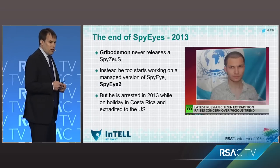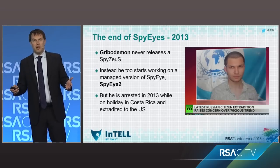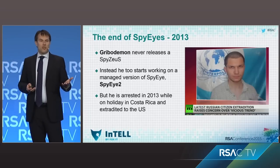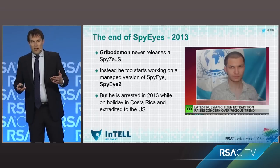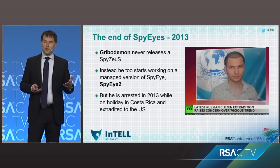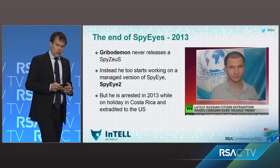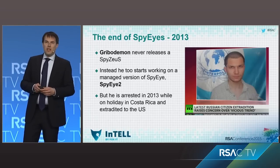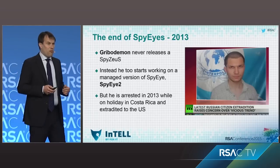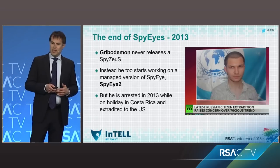So what happened to SpyEye in the meantime? Ever since Slavic gave the source code to Gribodemon, everybody was expecting Gribodemon to come up with a 'SpyZeus' — combine the best of both worlds and create a super Trojan. He never did. After the leak of the Zeus source code, he kind of lost interest as well. He figured out what Slavic had actually done and basically did the same: he ceased development of SpyEye and started developing a new version called SpyEye 2, available only as a managed service. He didn't get very long to profit from that, because in 2013 he decided to take a holiday to Costa Rica. What Gribodemon didn't know was that the FBI had figured out who he was, and when he got off the plane in Costa Rica he was promptly arrested and extradited to the US to face trial — and that was the end of SpyEye.